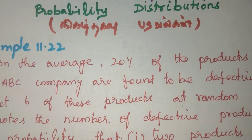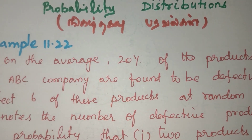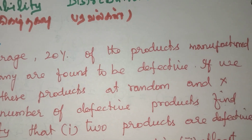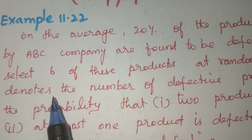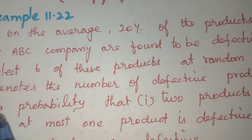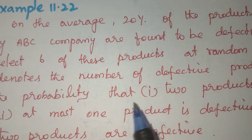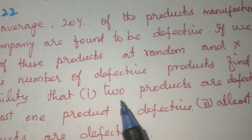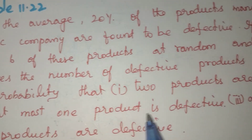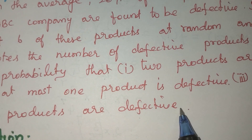On the average, 20% of the products manufactured by ABC company are found to be defective. If we select 6 of these products at random and X denotes the number of defective products, find the probability that: 2 products are defective; at most 1 product is defective; at least 2 products are defective.